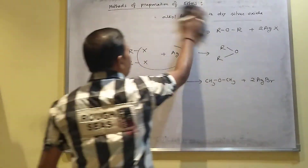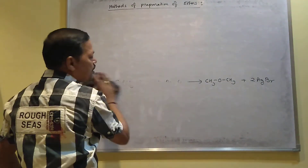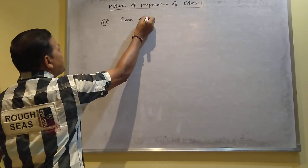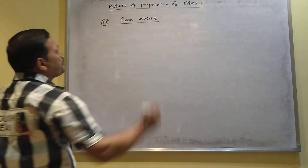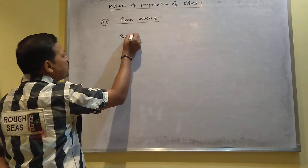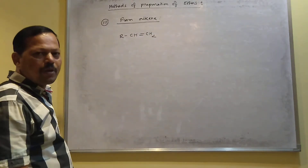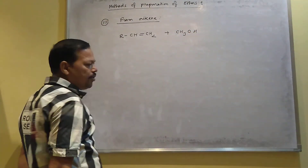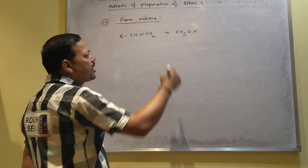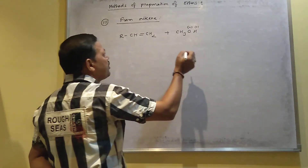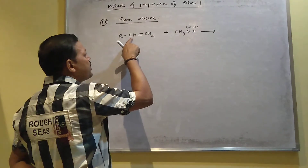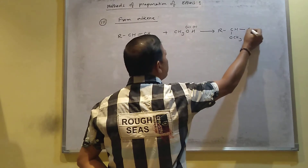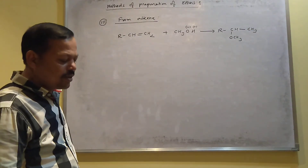The third method is preparation of ether from an alkene. An alkene — which may be ethene, propene, etc. — when combined with an alcohol such as CH₃OH, which is acidic in nature, releases H⁺ and CH₃O⁻. According to Markovnikov's rule, the negative group is added to the double-bonded carbon with fewer hydrogens, converting the double bond to a single bond, and forming the ether.